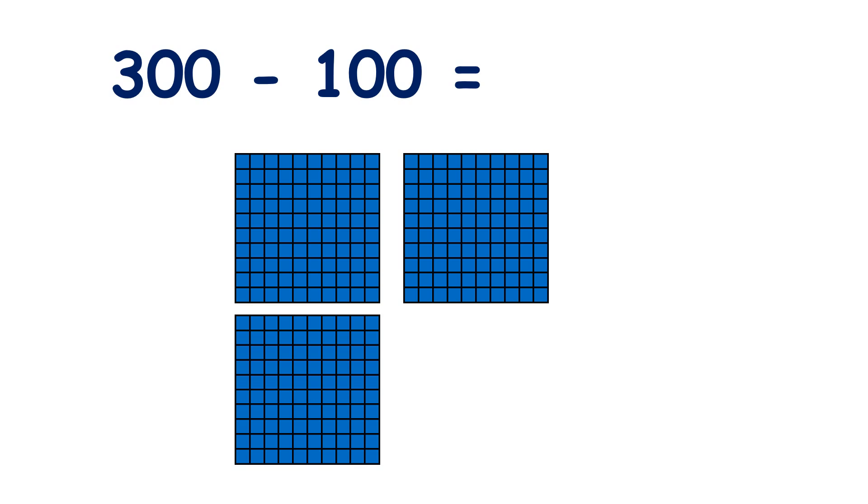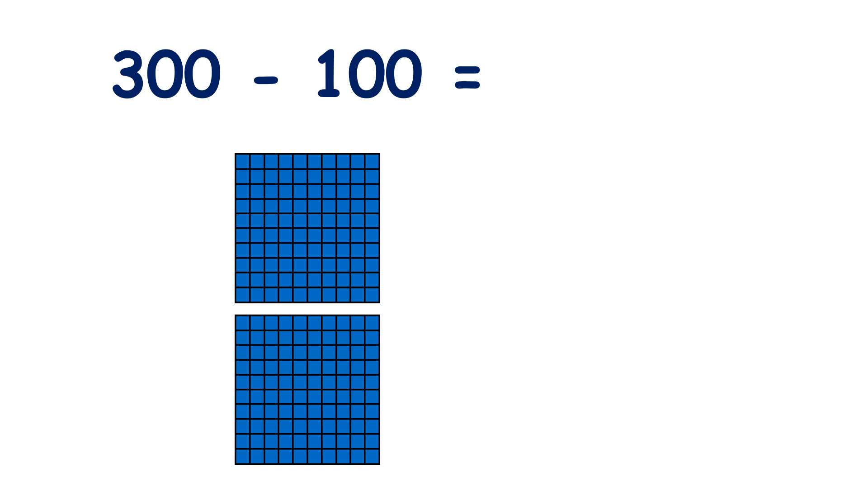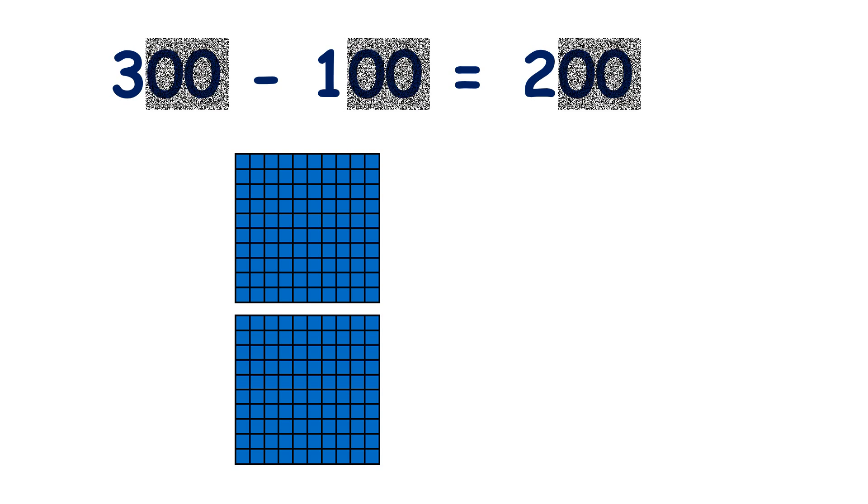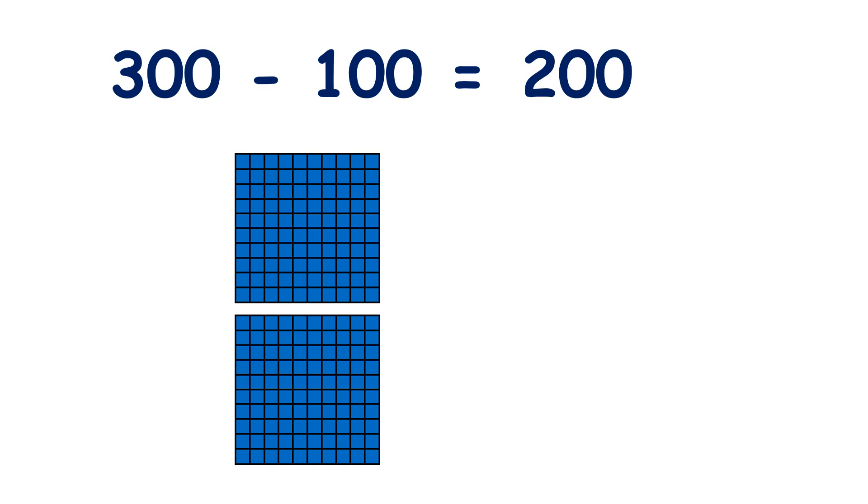Now let's look at subtracting multiples of 100. Here we have 300, and if we subtract 100, we now have 200. So if we know that 3 minus 1 equals 2, we know that 300 minus 100 equals 200.